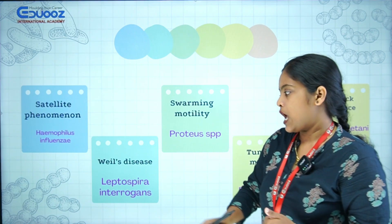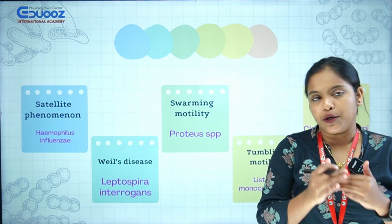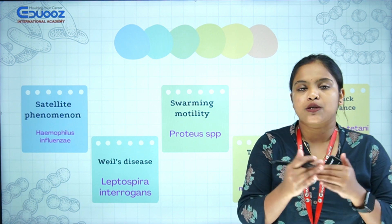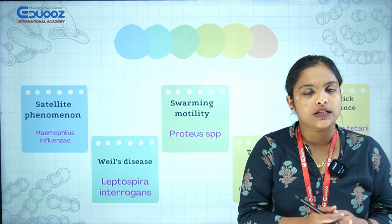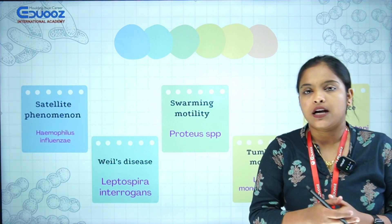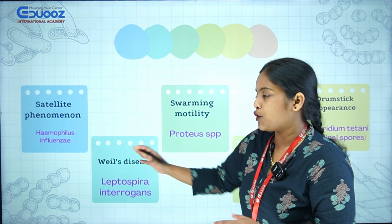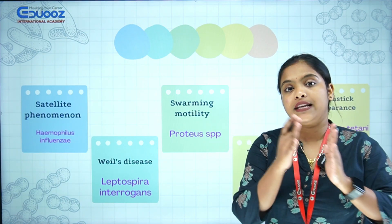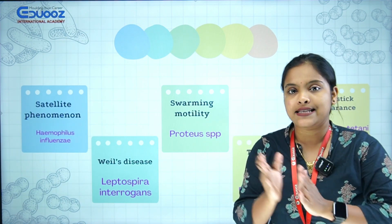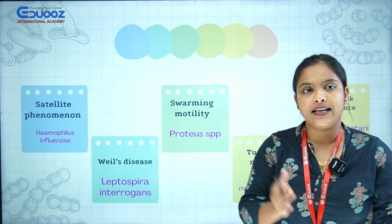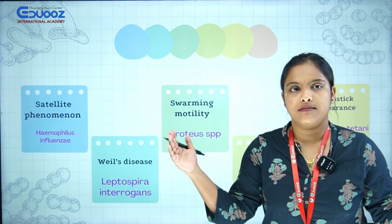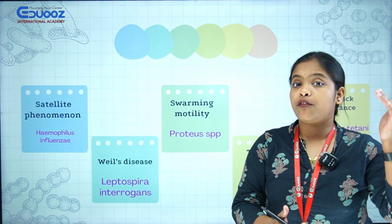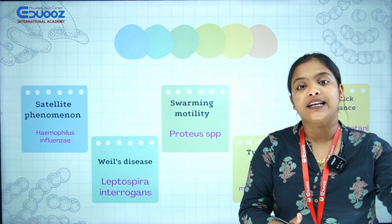Weil's disease is caused by Leptospira — Leptospira is a spirochaete, causing leptospirosis. Another point of confusion: the Weil-Felix test is for rickettsia. Weil's disease is Leptospira; Weil-Felix test is rickettsia.